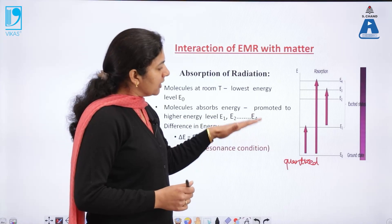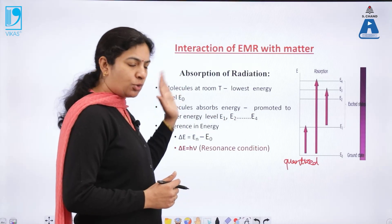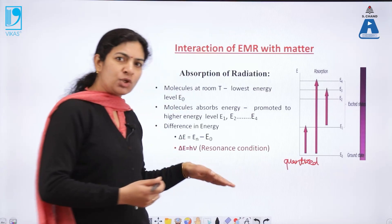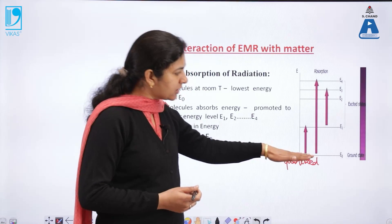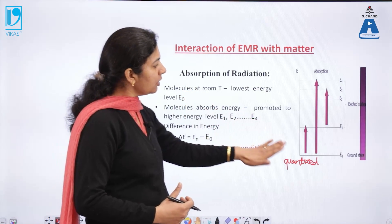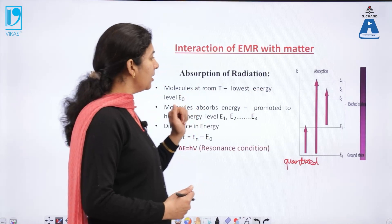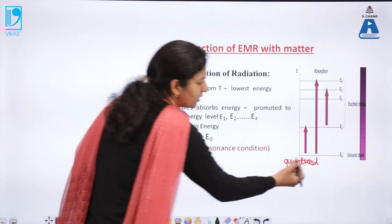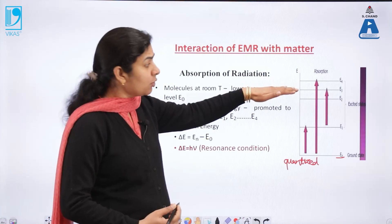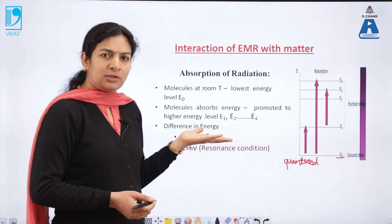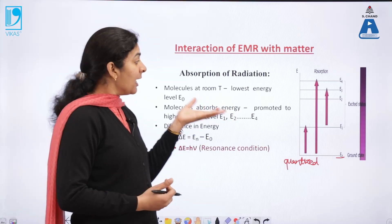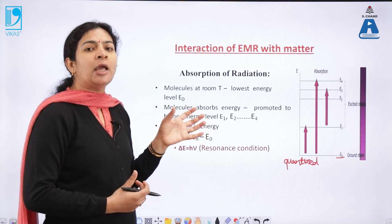When matter absorbs electromagnetic radiation, most of the molecules which are otherwise present in the ground state at room temperature will absorb energy from the electromagnetic radiation and will jump to higher energy levels. This ground state is generally represented by E-naught, and all other states are called excited states. So when a molecule absorbs energy, it goes to the excited state, and this is precisely what we call absorption.